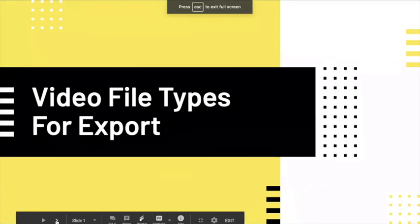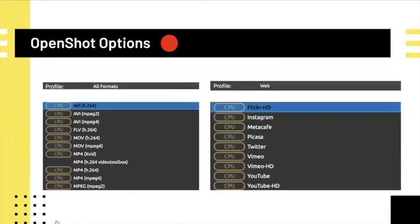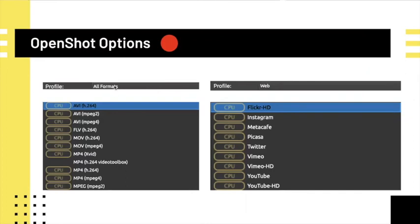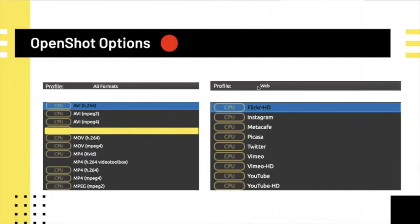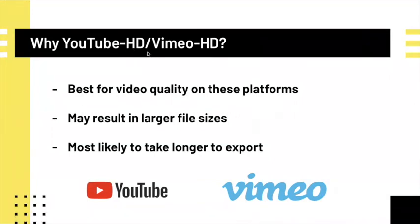Here we have some of the file types for exports available in OpenShot. Just a small disclaimer: for Learn it's usually best if you upload via another site — if you have a YouTube link it's usually easier to play, as Learn doesn't take too large file sizes. For OpenShot export options there are two sections of the profile that will be helpful to you: all formats and web. For all formats, almost all are compatible with Learn except for the FLV one. In terms of the web options, you'll really only ever need the Vimeo HD or the YouTube HD options.